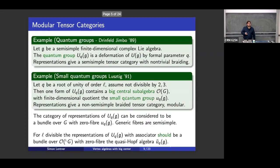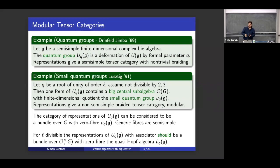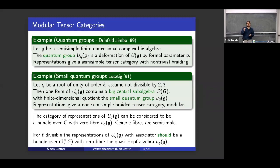Then we go to quantum groups, deforming to make the braiding non-trivial. Let G be a semi-simple finite-dimensional complex Lie algebra. We define the quantum group — essentially the universal enveloping of the Lie algebra but with a deformation parameter Q. If Q is a root of unity, Lusztig showed that one specialization contains a very big central sub-algebra equal to the algebra of functions on the Lie group. Taking the quotient by this big central sub-algebra gives the small quantum group, a finite-dimensional non-semi-simple Hopf algebra, and a non-semi-simple finite braided tensor category which is modular in the non-semi-simple sense.